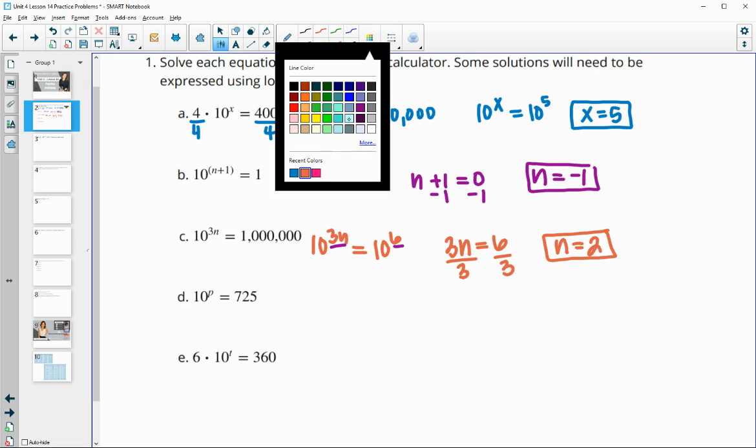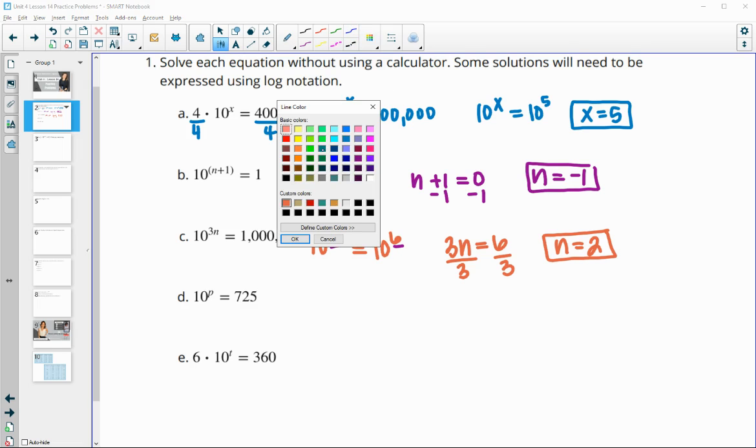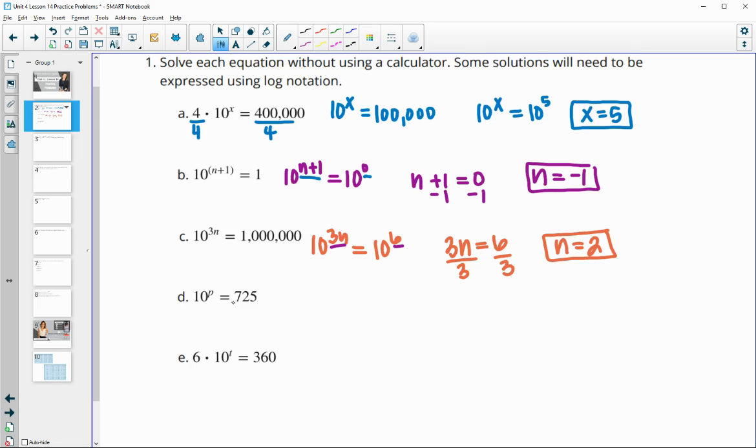Next one, we have something that can't be written as base 10. 725 cannot be written as base 10, so this is one we need to write in log form. This is saying log base 10 of 725 equals p. That would be our answer, can't simplify it further without using our calculator.